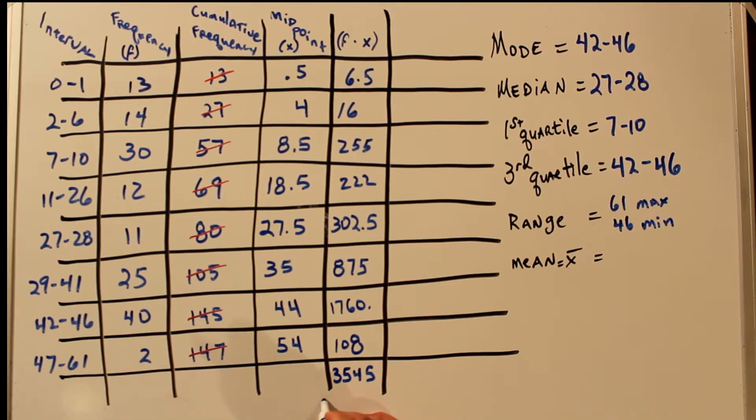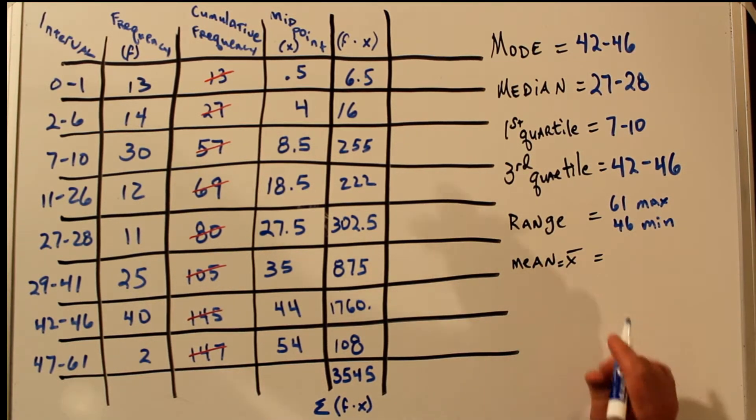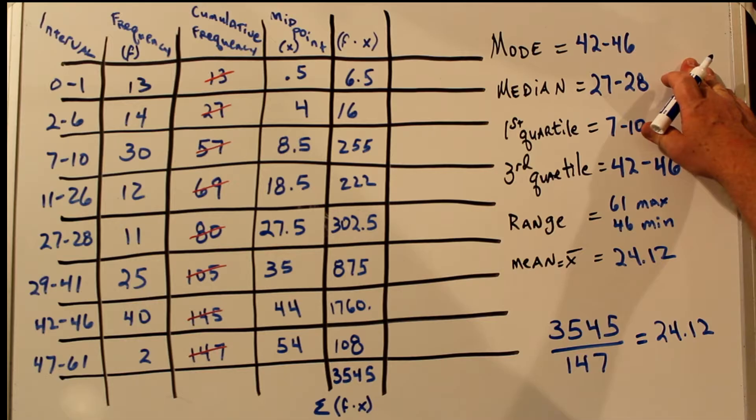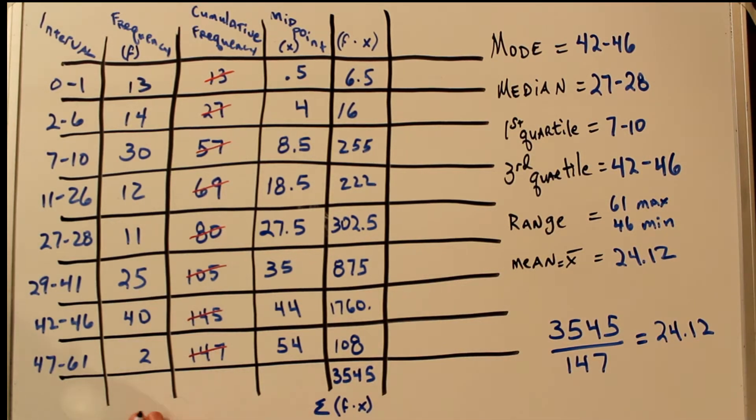So the sum of this column is 3545. And that can be written with a sigma, which means summation F times X. So the mean, or X bar, is going to be 3545 divided by the number of data points, 147, or 24.12. And that's how we find these statistical numbers for a frequency distribution.